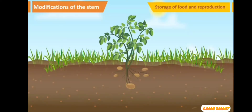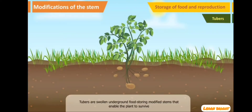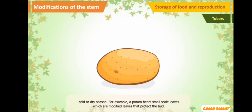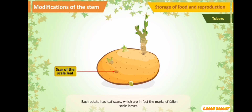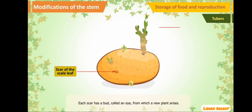Storage of food and reproduction: Tubers are swollen, underground, food-storing modified stems that enable the plant to survive cold or dry seasons. For example, a potato bears small scale leaves, which are modified leaves that protect the bud. Each potato has leaf scars, which are the marks of fallen scale leaves. Each scar has a bud, called an eye, from which a new plant arises.